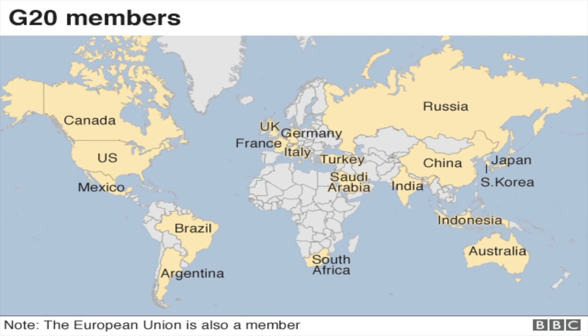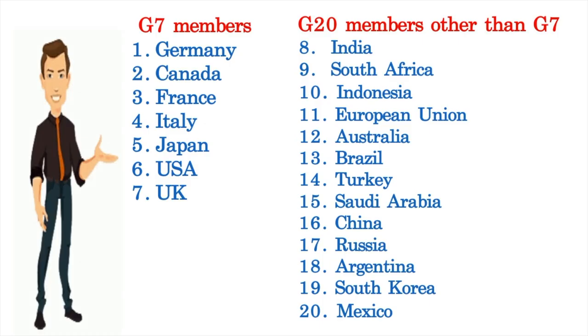EU is also part of G20. Do you know how many countries are there in the EU? It is 28. This is the list of 20 members of G20, which includes all the 7 member countries of G7.